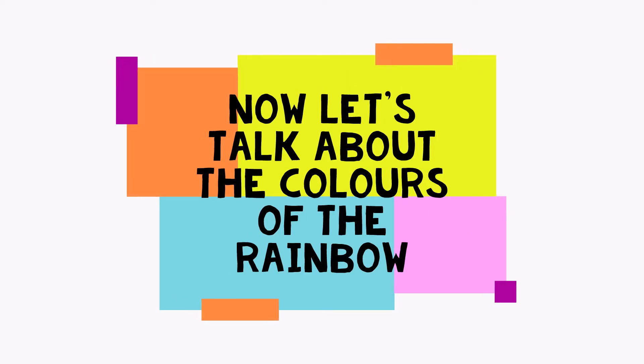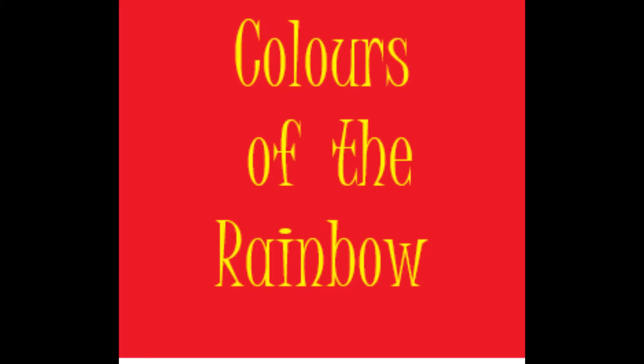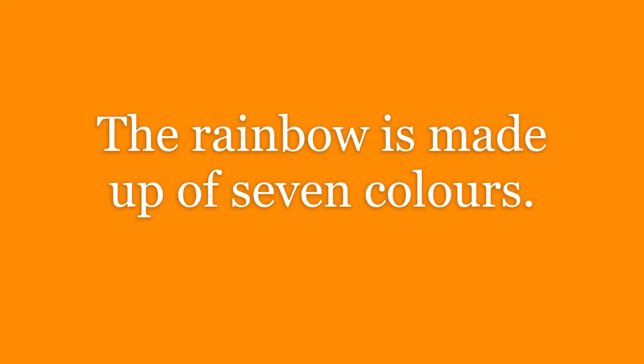Now let's talk about the colors of the rainbow. Colors of the rainbow. The rainbow is made up of seven colors: Red, Orange, Yellow, Green, Blue, Indigo, and Violet.